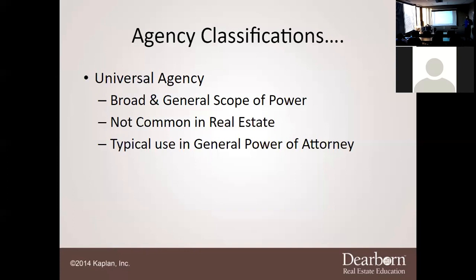You do not use a power of attorney in a transaction — it is only for family members or friends. Say I'm going in for major surgery, I may sign Mr. Eugene as my power of attorney to take care of my decisions while I'm under. Just like when the President goes under, the Vice President steps up. Universal agency is that point where Mr. Eugene or anyone appointed can make decisions on that person's behalf.